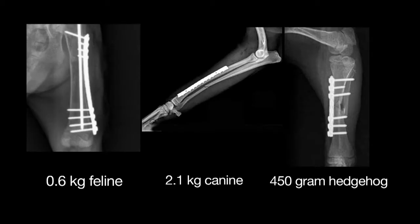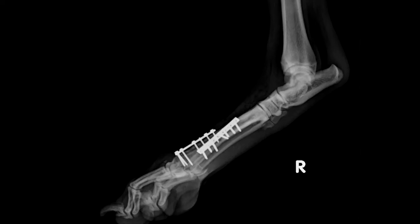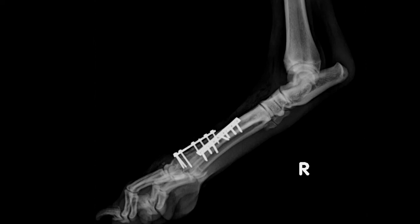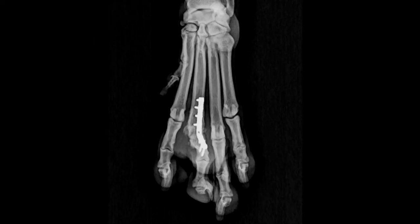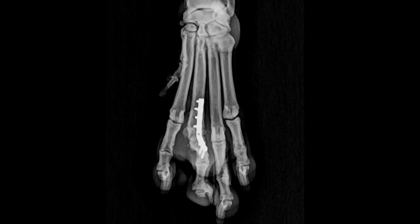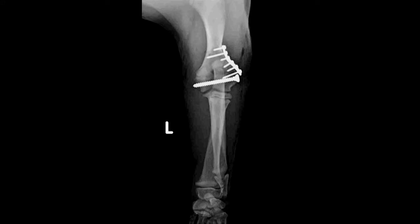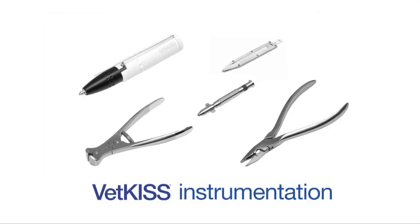VetKISS has proven valuable for repair of multiple metacarpal and metatarsal fractures, as well as digit fractures in larger patients. These small implants have also found utility as supplemental fixation to support primary lag screw repair of humeral condylar fractures.